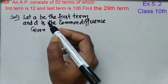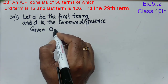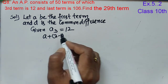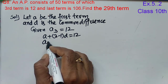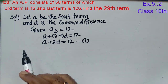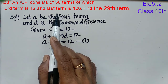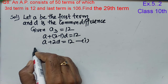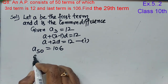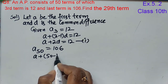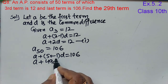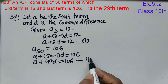A3 equals 12. A3 can be written as A plus (3 minus 1) into D equals 12, giving A plus 2D equals 12 — this is equation one. The AP consists of 50 terms and the last term is 50th. A50 is given as 106. So A plus (50 minus 1) into D equals 106, giving A plus 49D equals 106. This is equation two.